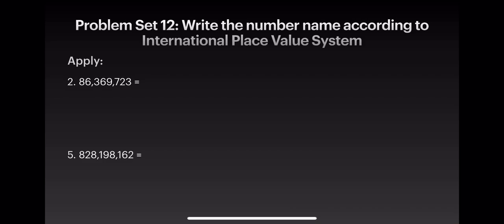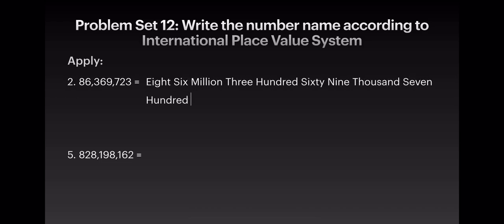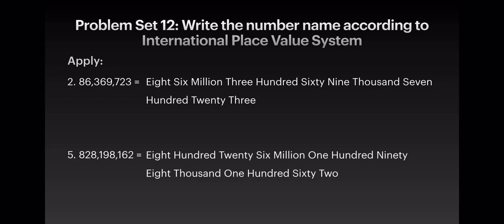Moving on to problem set 12: write the number name according to the international place value system. The C part has worked-out examples and try sums — I am sure you will do it immediately. Let us do the second and fifth sums. The second sum: the given number is 86369723, written in the international place value system as 86,369,723. The fifth sum: the given number is 826198162, written as 826,198,162.